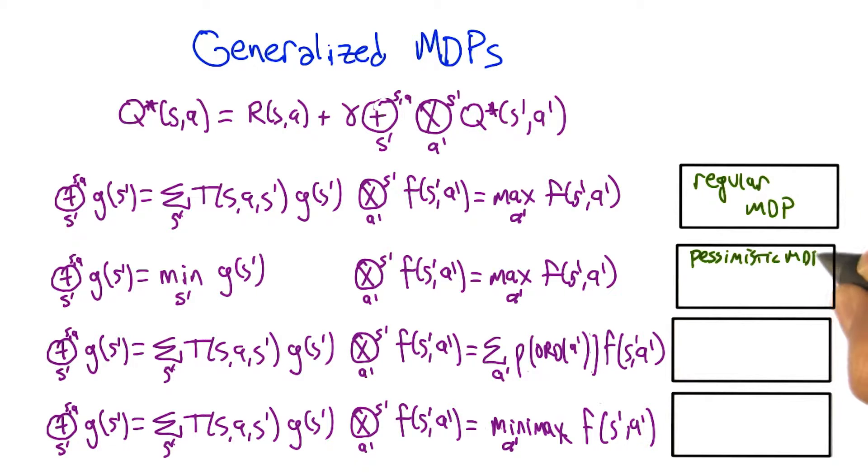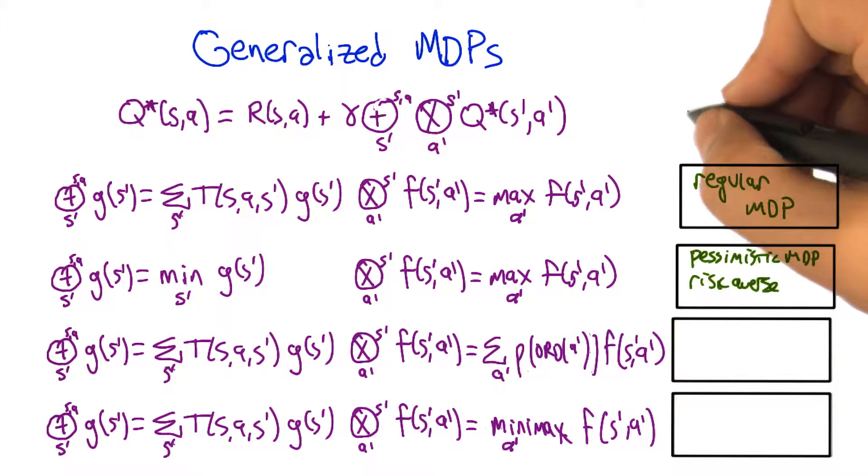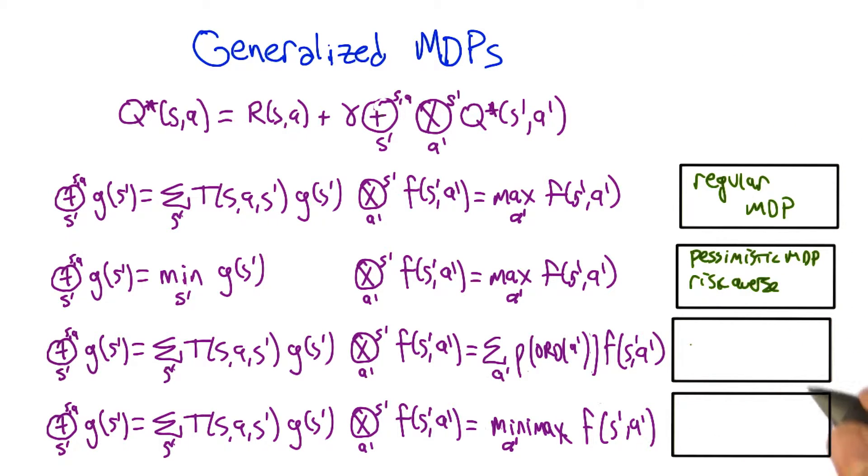Ooh, good. Worst case MDP maybe. Yeah. It's also related to, in control theory, the notion of h-infinity control. The h-infinity control basically says, you know, I don't know what's going to happen, so let me assume that the worst thing's going to happen.